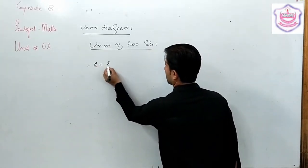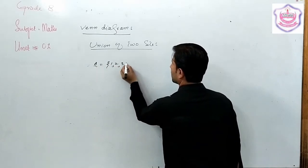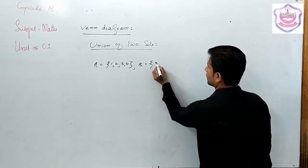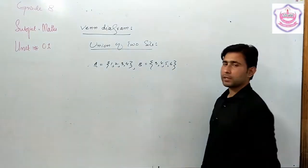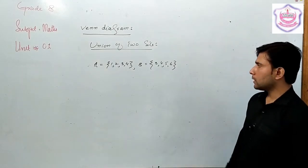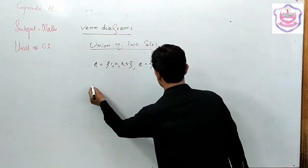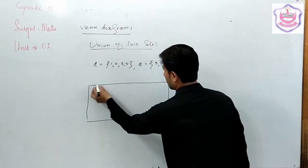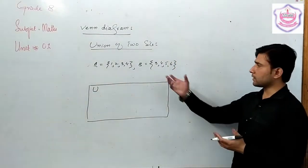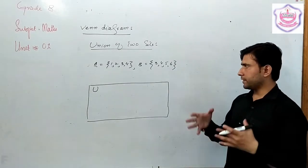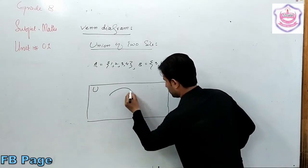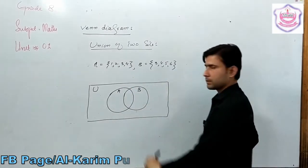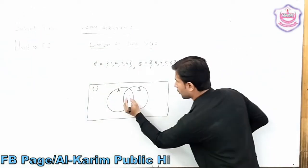For example, set A contains elements 1, 2, 3, 4 and set B contains elements 3, 4, 5, 6. The circles for set A and set B share a common portion. The common elements are 3 and 4, and the non-common elements are also identified.